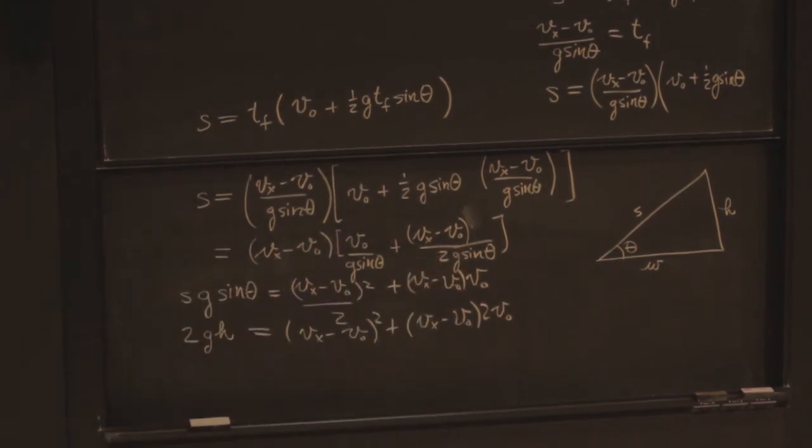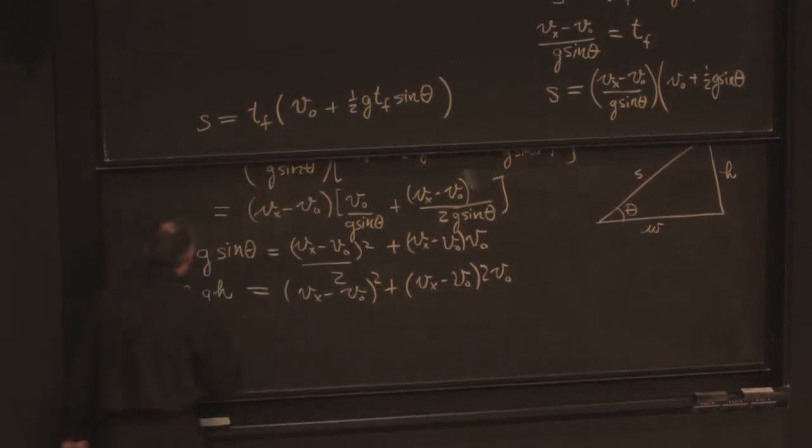Multiply up by 2 is equal to vx minus v0 squared plus vx minus v0 times 2v0. Now what I'd like to do is just say, suppose that I drop it from rest. V0 is 0, and I get 2gh is equal to vx squared, if v0 is 0.